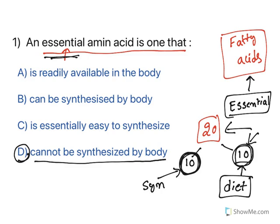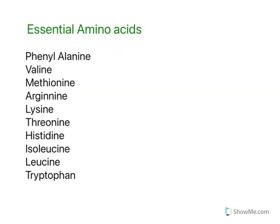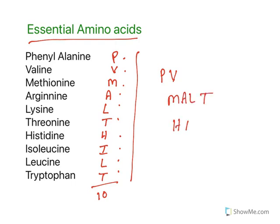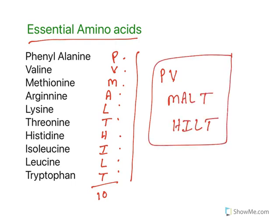You need to learn what are these 10 amino acids that are essentially required from the diet. This is the list of essential amino acids: phenylalanine, valine, methionine, arginine, lysine, threonine, histidine, isoleucine, leucine, tryptophan. These 10 are essential amino acids. In order to memorize them, there is a mnemonic: P-V-M-A-L-T malt, H-I-L-T hilt. You can remember it as PV-MALT-HILT — this is the mnemonic to remember essential amino acids.